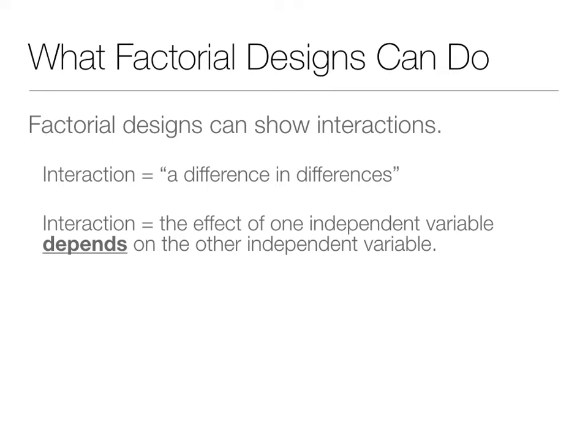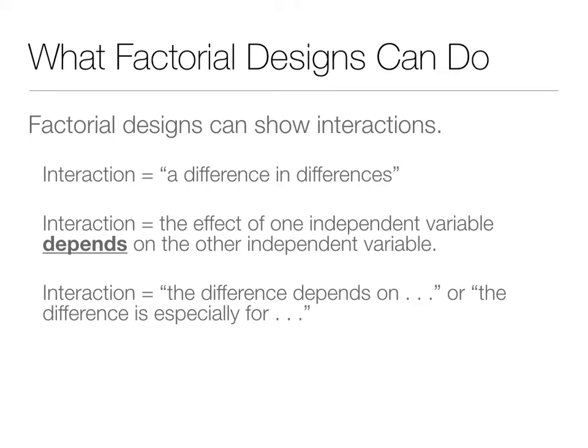One level of the independent variable depends on the other independent variable. We'll say the difference depends on, or the differences are especially true for — we'll talk about how it's this way for one level, however it's different for another level. Some sort of caveat statement shows there's a difference in the differences. We don't live in a main effect world, and that's why factorial designs are really helpful. These things interact with each other, and complex designs like factorial designs allow us to look at that.